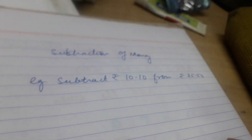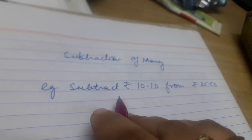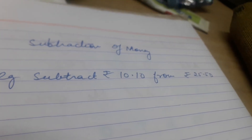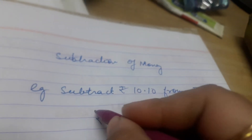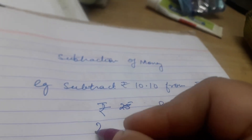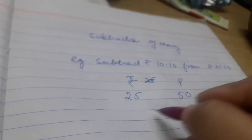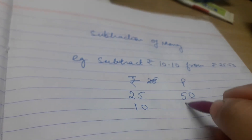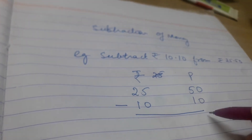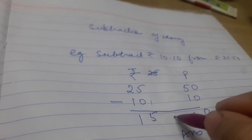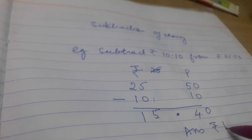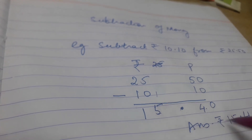Next is subtraction of money. Subtraction of money will also be done in the similar way. Suppose you have to subtract Rs. 10, 10 paise from Rs. 25, 50 paise. Again you will make 2 columns — one rupee column and one paise column. Write Rs. 25, 50 paise first, then Rs. 10, 10 paise below. Now subtract: 0 minus 0 is 0, 5 minus 1 is 4, 5 minus 0 is 5, 2 minus 1 is 1. Rs. and paise are separated by a point. Your answer will be Rs. 15, 40 paise.